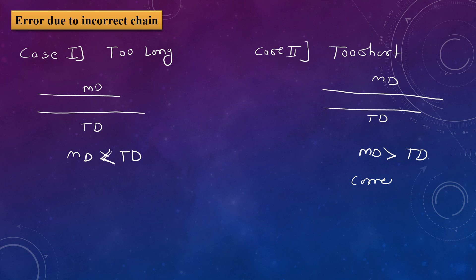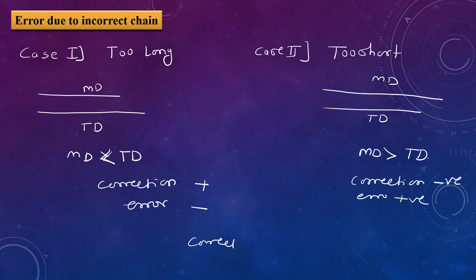When the measured distance is less than the true distance (chain too long), the correction is negative and the error is positive. When the measured distance is more than the true distance (chain too short), the correction is positive and the error is negative. The formula for correct distance is: True Distance = (l' / l) × Measured Distance, where l' is the actual length (too long or too short) and l is the true length of the chain.